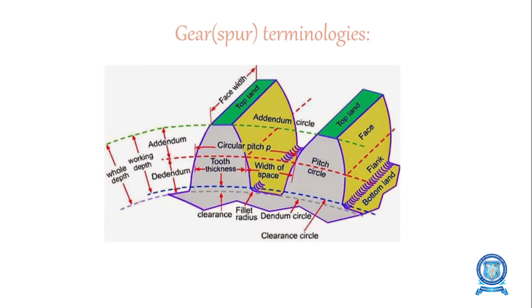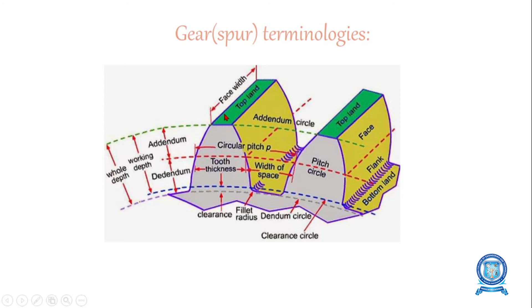Face of the gear tooth is the part of the tooth in the axial plane existing between the tip circle (addendum circle) and the pitch circle. Flank is the part placed between the pitch circle and the root circle or dedendum circle. The top surface of the tooth is called the topland.